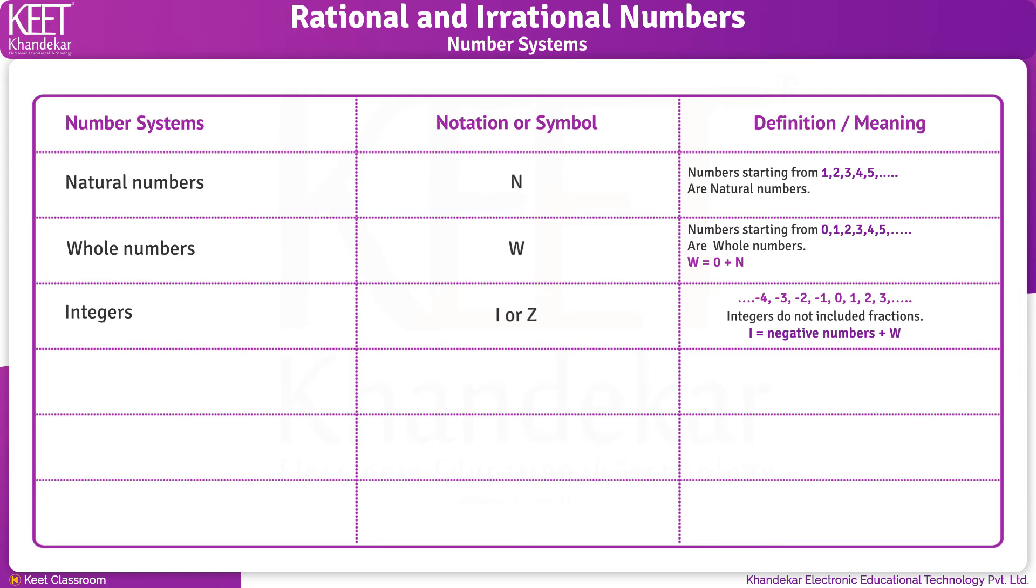The next number system is rational numbers, denoted by symbol Q. The numbers written in the form M upon N, that is, fractions are called rational numbers.